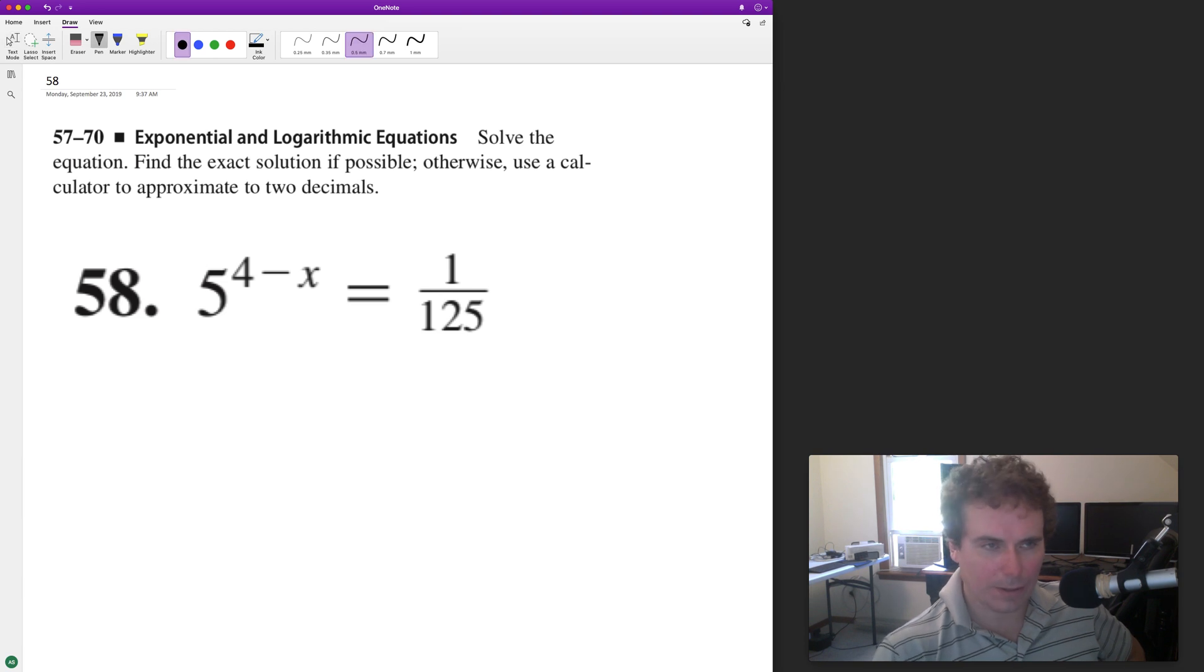All right, so what we can do here is we can do 5. So 5 is going to be raised to the 4 minus x, but we can rewrite 1 over 125 the same as 5 raised to the negative 3. So because they have the same base now,